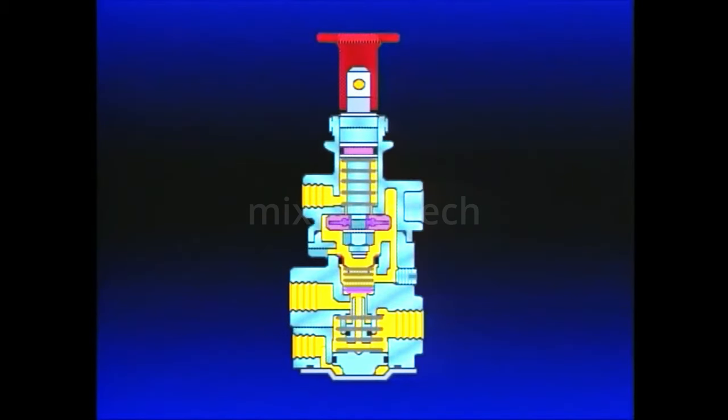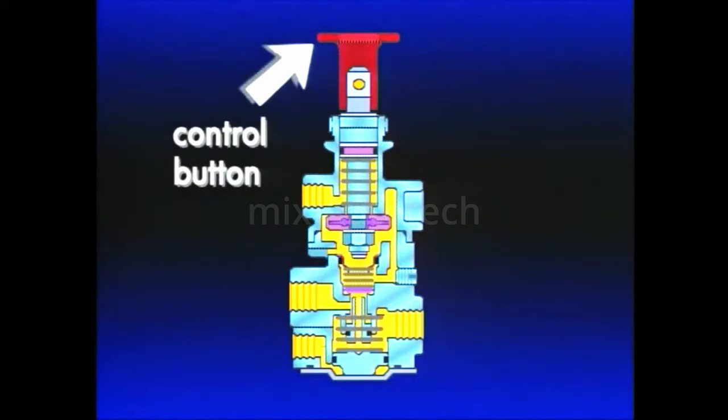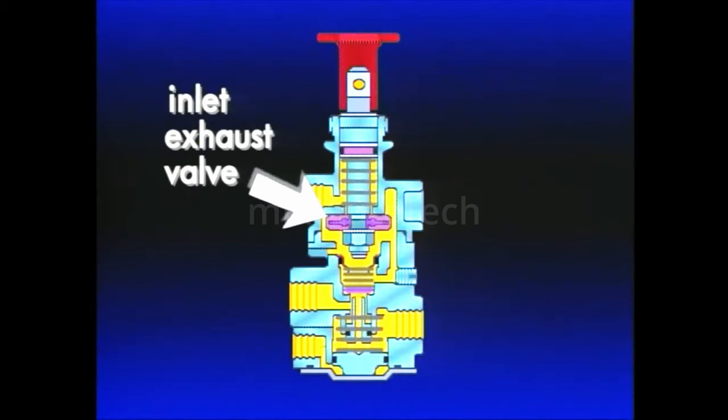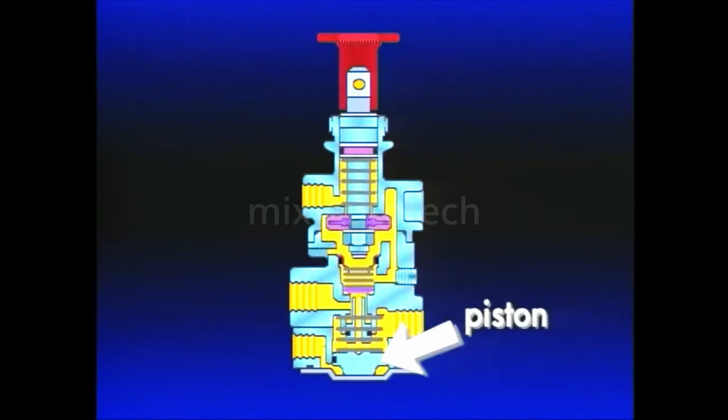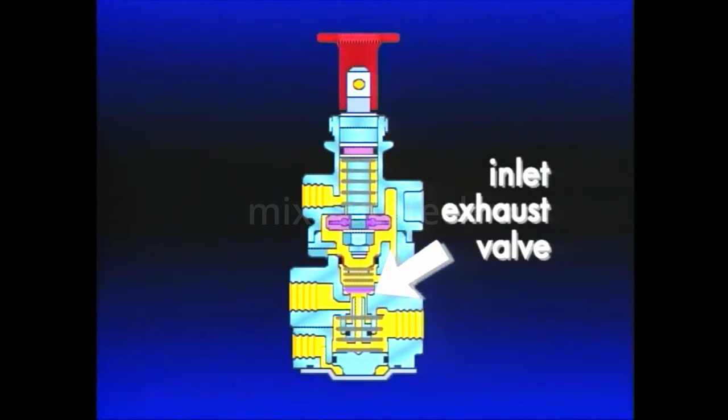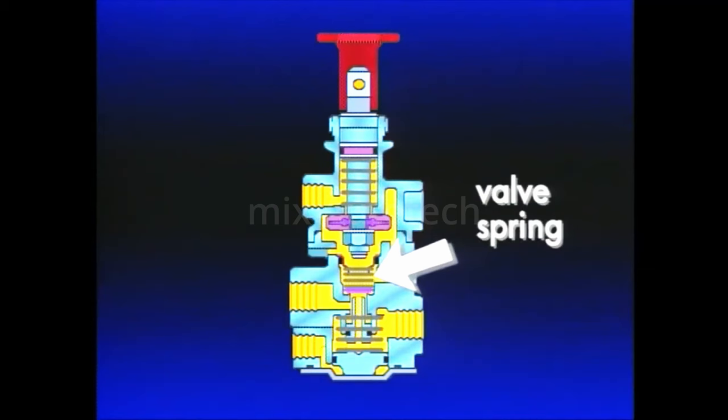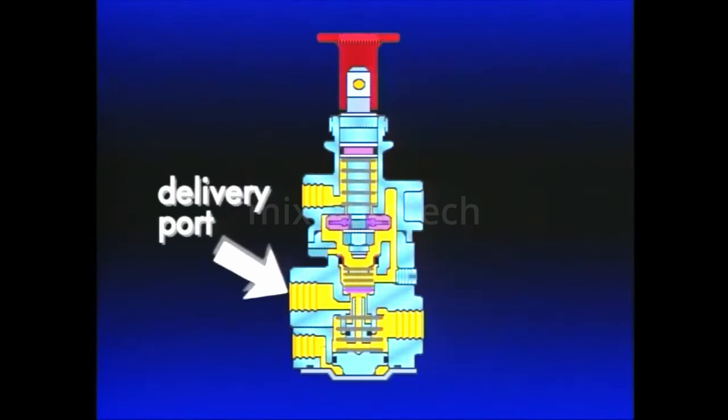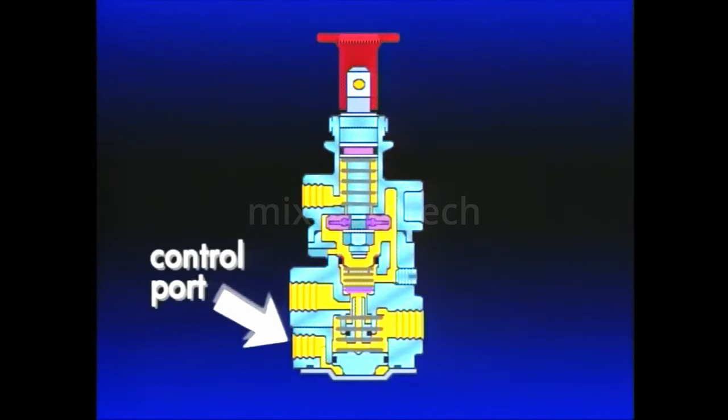The upper half of the PP7 consists of a control button, plunger, spring, and inlet exhaust valve. The lower half contains a piston, piston return spring, inlet exhaust valve, and valve spring. In addition to an exhaust vent and exhaust port, the PP7 body has three air connections: supply port, delivery port, and control port.